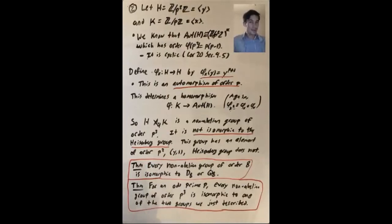When p equals 2, something a little bit special happens. You could do these constructions that we did for 1 and 2, but they actually both lead you to D8. So for groups of order 8, there are three abelian ones, Z mod 8Z, Z mod 4Z cross Z mod 2Z, and Z mod 2 cross Z mod 2 cross Z mod 2.